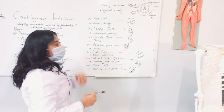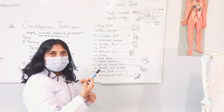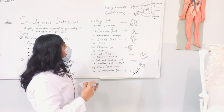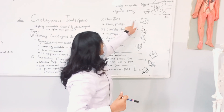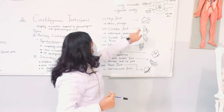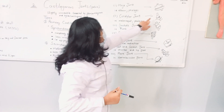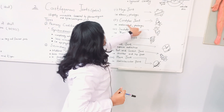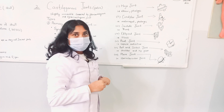The first type is the hinge joint, for example the elbow and phalanges. This is the diagram of the hinge joint. The condylar joint — this is its diagram — involves the metacarpals and phalanges.